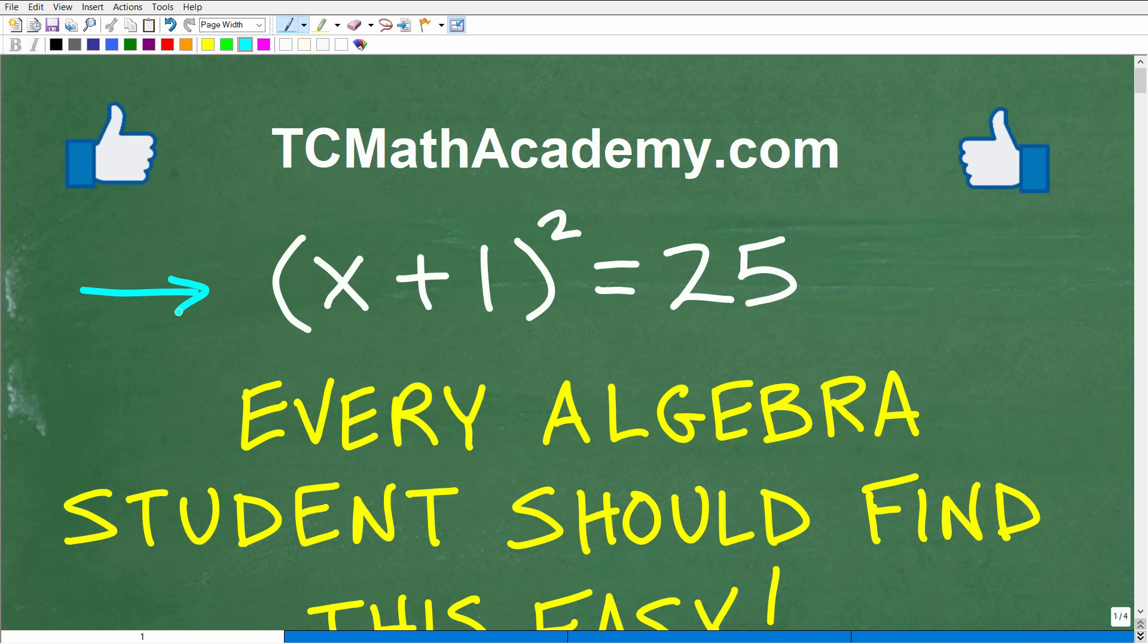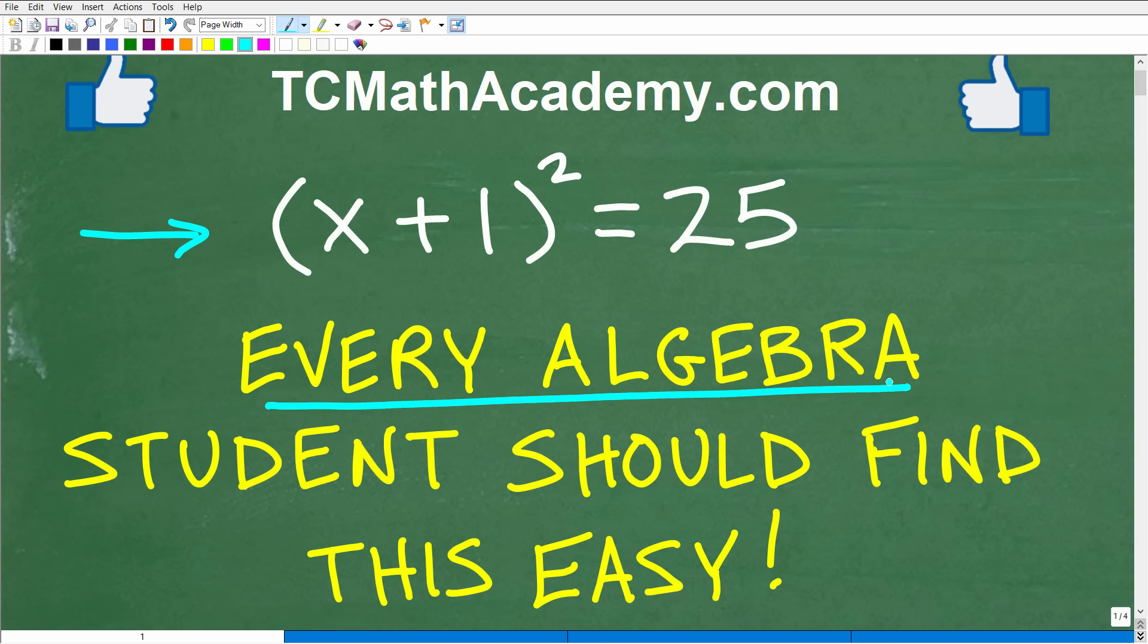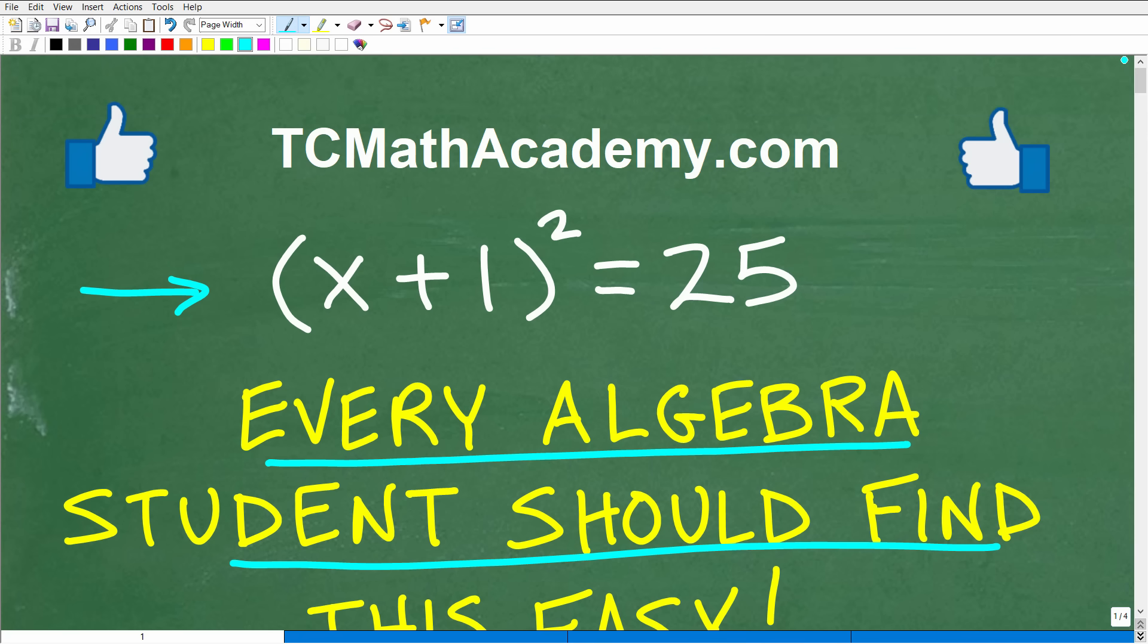Okay, so this equation is easy to solve. Let's take a look at my title here. It says every algebra student should also find this equation easy to solve. But we'll see how well your algebra skills are in this current moment in time. But the equation is parentheses x plus 1 parentheses squared is equal to 25, and what we want to do here is solve for x.